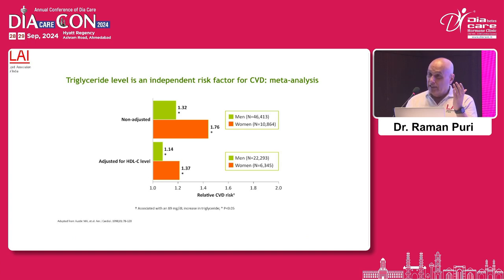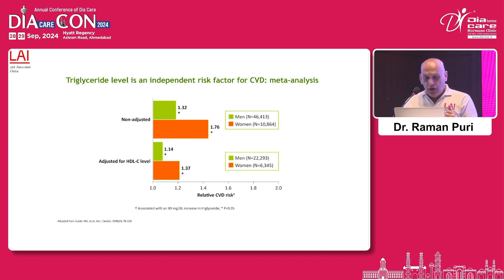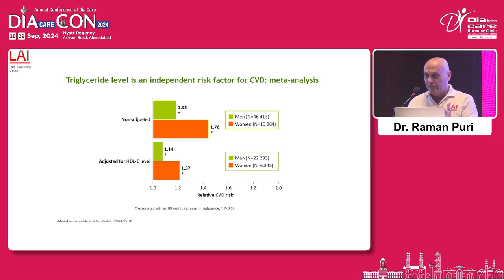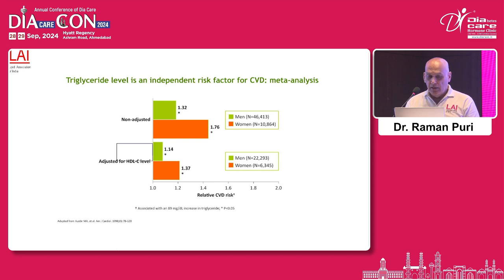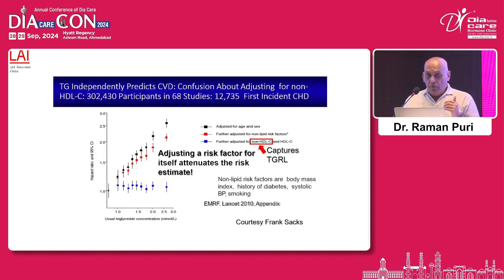Is triglyceride really a culprit? This meta-analysis shows that if you increase triglyceride by 90 mg, it increases events by 76% in women and 32% in men — unadjusted. When adjusted, it came down from 76% to 37% and from 32% to 14%. When adjusted for both HDL and non-HDL cholesterol, triglyceride loses its significance completely — you can see an absolutely straight line.